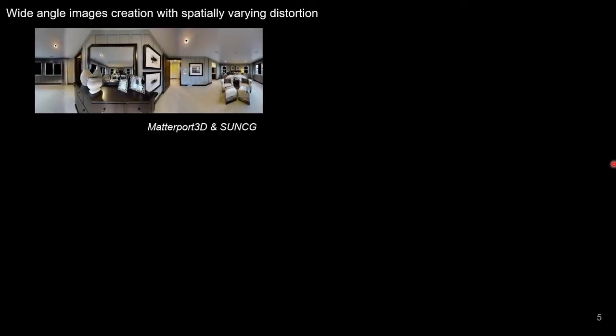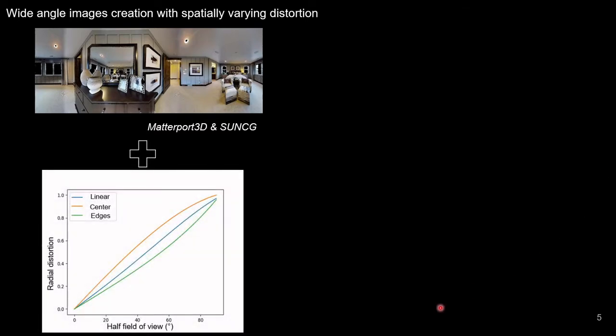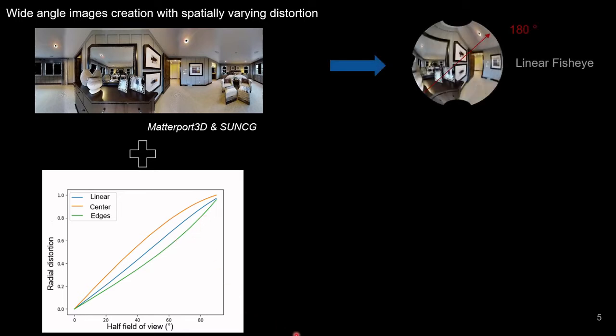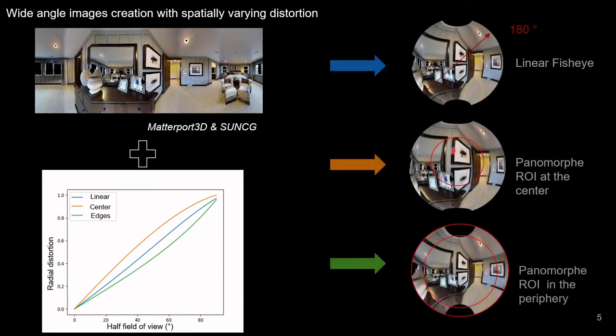We used one linear fisheye and two panomorph lenses for the first experiment. We created a dataset of images for each system by warping multiple 3D panoramic images using this distortion function. As all of them increased the pixel density from the center to the edges of the image, we can notice the non-linearity for the panomorph lenses in orange and green. In this way, we can simulate images with 180 degrees of field of view with different regions highlighted.